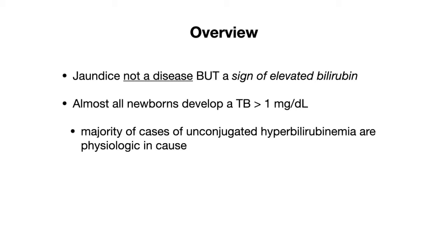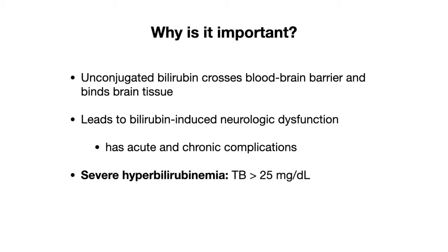The majority of cases of unconjugated hyperbilirubinemia are physiologic or benign in cause. The significance is that unconjugated bilirubin is lipid soluble, so it can cross the blood-brain barrier and bind to brain tissue. This can lead to bilirubin-induced neurologic dysfunction, which has both acute and chronic complications, so it's very important to try to prevent this from happening.